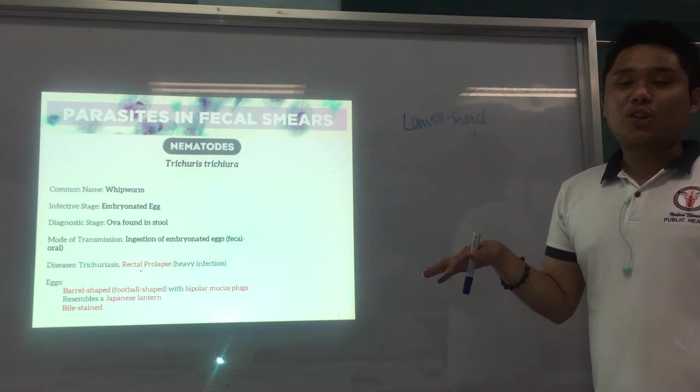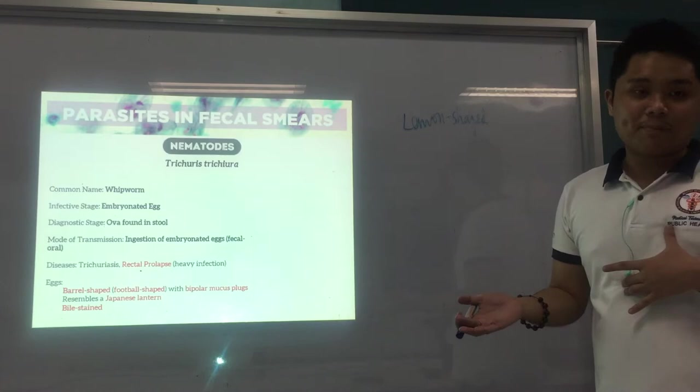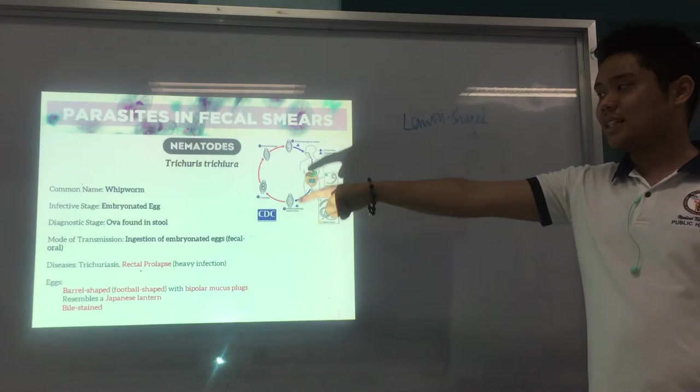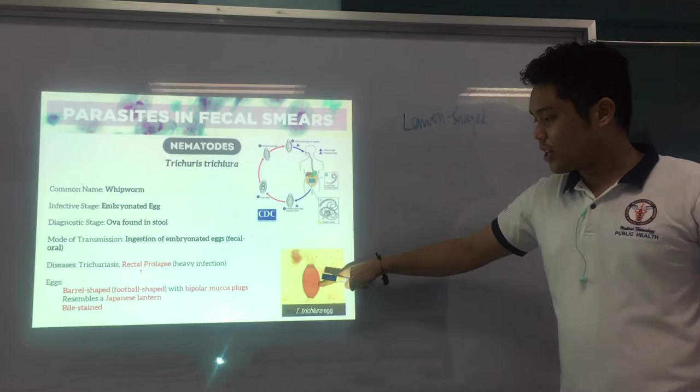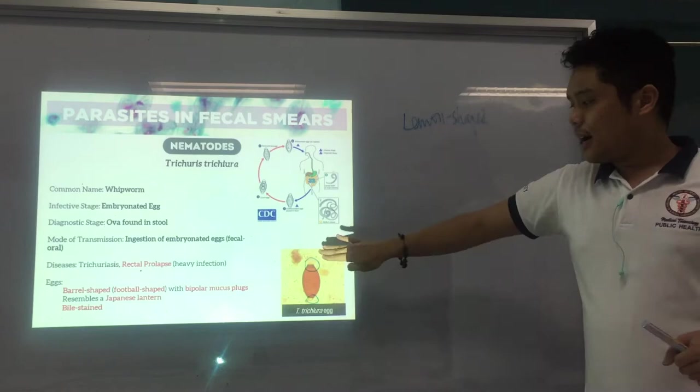Ascaris and Trichuris usually come together because they have the same mode of transmission and infective stage. This is the life cycle of Trichuris — it's still the same as Ascaris with fecal-oral transmission and ingestion of embryonated eggs. The egg appears football-shaped with prominent bipolar mucus plugs that protrude outward, resembling a Japanese lantern.